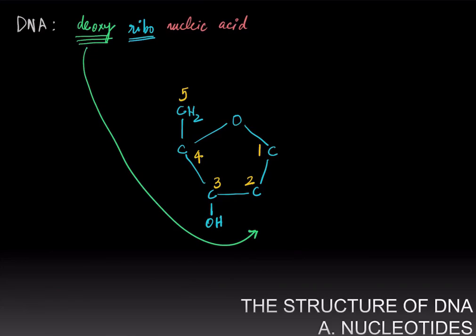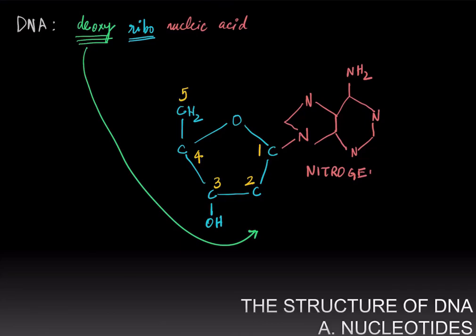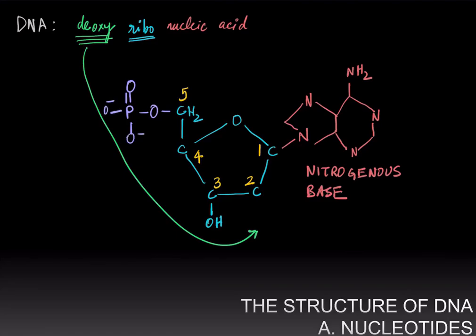Then we have the nitrogenous base, and to the fifth carbon is attached a phosphate group. This phosphate group is negatively charged. And here we have the basic repeating unit of DNA, which is a deoxyribose with a nitrogenous base and a monophosphate — a single phosphate.